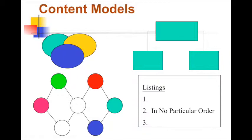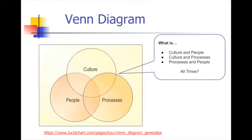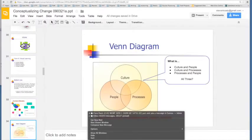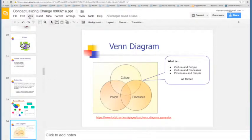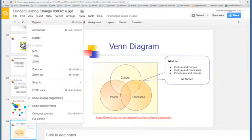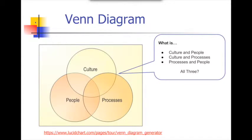There are different ways to have your content models relate to each other. For example, a Venn diagram. I'd like to get some answers from you all: when you have culture and people overlapping, what do you call that? When you have processes and people overlapping, what do you call that? And what do you call it when all three overlap? Culture overlapping with people, culture overlapping with process, process overlapping with people - what would you all call those?